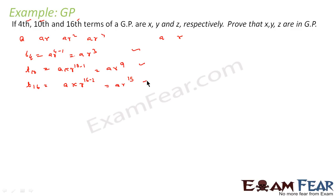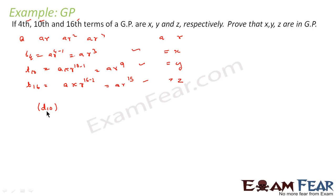We are told that the 4th, 10th, and 16th terms are equal to x, y, and z respectively — so T4 = x, T10 = y, T16 = z. We have to prove that x, y, z are in GP. Since the 4th, 10th, and 16th terms are in GP, we can say that T10² = T4 · T16.